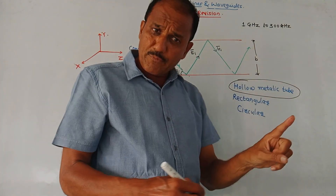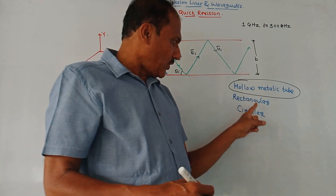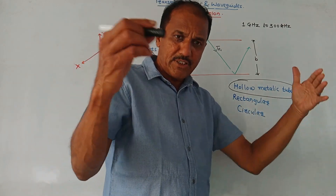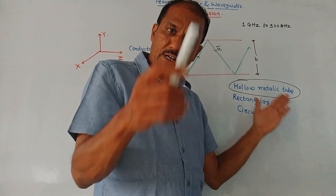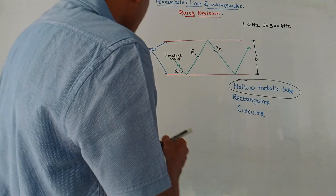There are two types of wave guides: one is rectangular and another is circular. If the shape is rectangular, it is a rectangular wave guide. If it is circular, it is a circular wave guide.